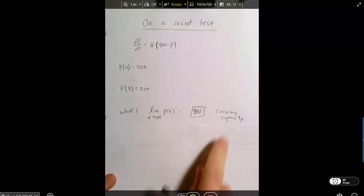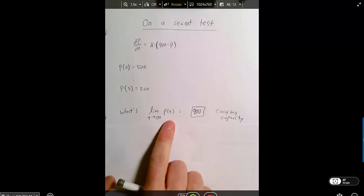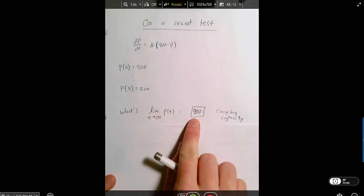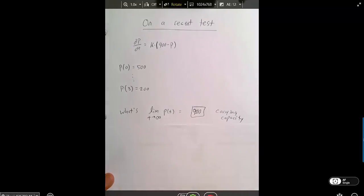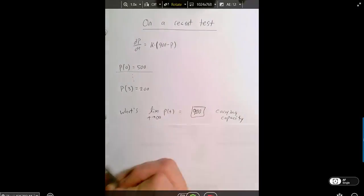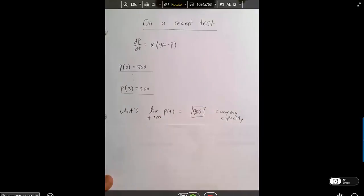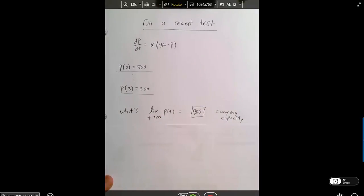And I think you did that just because every other problem we've done so far, when you've seen this, the answer is always, it's asymptotically approaching the limit. But what you didn't do is you didn't actually think about the information that the problem was telling you. If I've got 500 wolves in year zero and 200 wolves in year three, that certainly doesn't seem like it's going to be approaching the carrying capacity. So that should be a red flag already that something's going wrong.